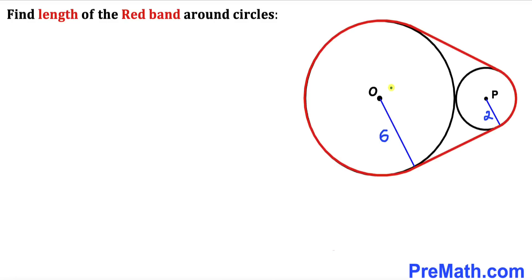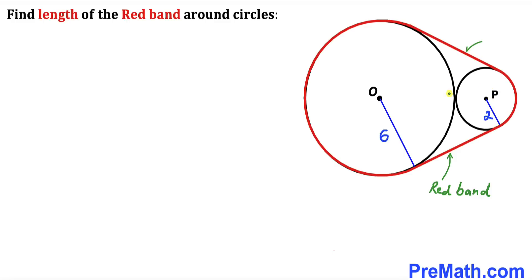Welcome to pre-math. In this video we have these two circles that are tangent to each other, as shown in this diagram, such that the radius of the bigger circle is 6 units with center O, and the radius of the smaller circle is 2 units with center P. Moreover, this red band is wrapped around these two circles, and we are going to calculate the length of this red band.